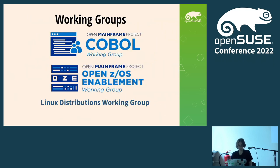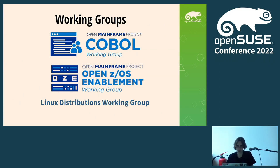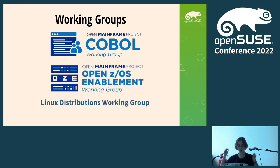Besides all these sub-projects, the Open Mainframe Project also has some working groups, which is where we joined as a Linux Distribution Working Group. One of the existing working groups is the COBOL working group, and there is also the Open z/OS Enablement working group. Last year at IBM Z Day, they gave a talk and said there is a Debian working group, and we said: why only the Debian working group? We want to have one Linux Distribution Working Group for all.